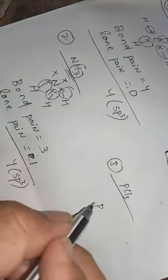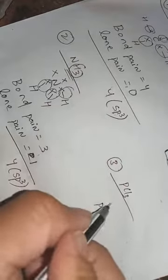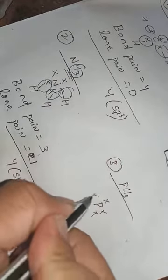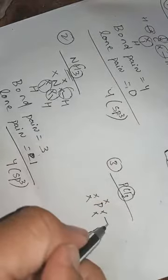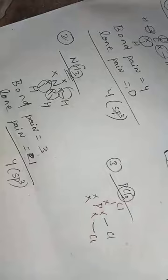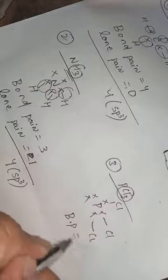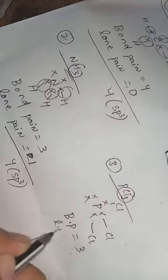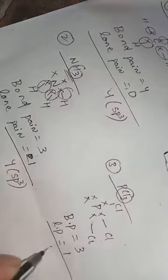Let's take another example of PCL3. We know in phosphorus there are 5 electrons in its outermost shell. Here see 3 chlorines. So 3 chlorines will bond with 3 electrons of phosphorus. So bond pair is equal to 3, lone pair is equal to 1. 4 is SP3 hybridization.